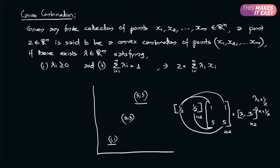If there are more than two points in two dimensions, for example we also have the point (6,6), so we have three points: (6,6), (5,5), and (1,1). We can say that (3,3) is a convex combination of all these three points. So it doesn't matter if we are in two dimensions — we can have more than two points and take a convex combination of those points.